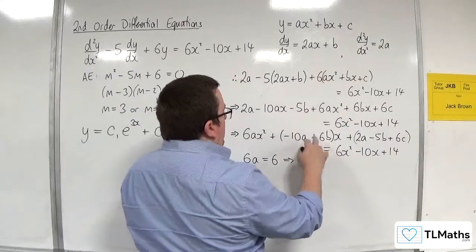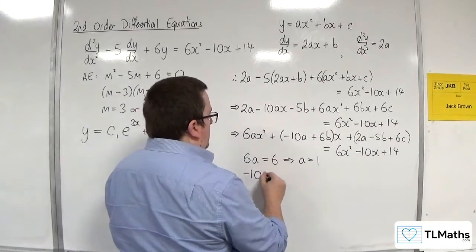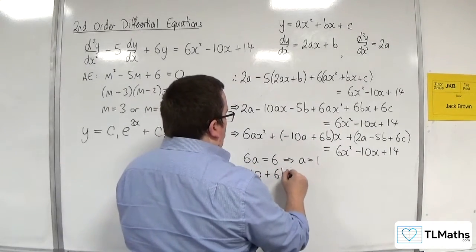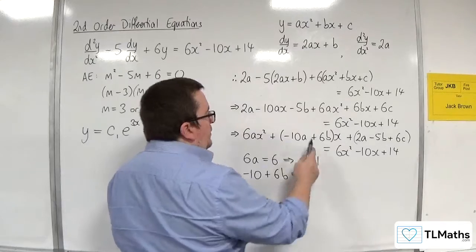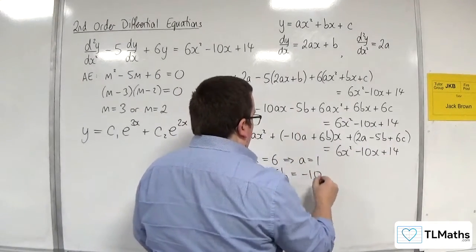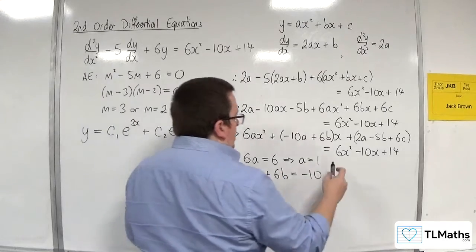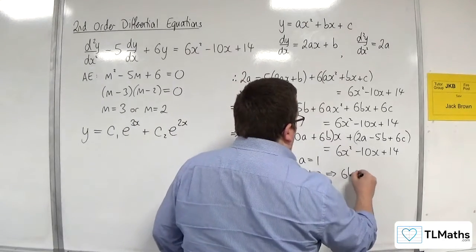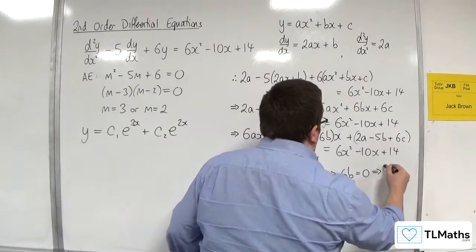Right, substituting a equals 1 into this, we're going to get minus 10 lots of 1 plus 6b. And that's got to be equal to the coefficient of x on the right-hand side, which is minus 10. So add 10 to both sides, leaves us with 6b must be 0, and so b must be 0.